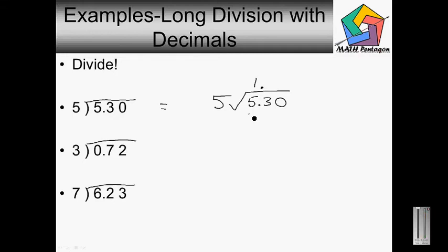So 5 times 1 is 5. 5 minus 5 is 0. Bring down the 3. 5 goes into 3 zero times. 3 minus 0 is 3. Bring down the 0. 5 goes into 30 six times. So our final answer would be 1.06 for the first problem.